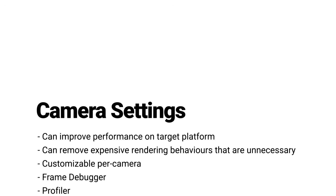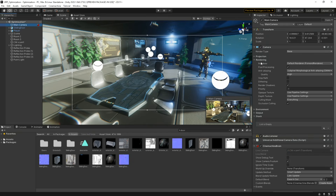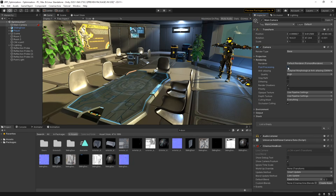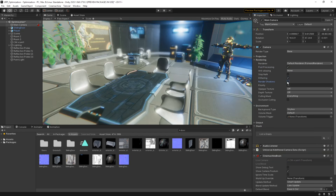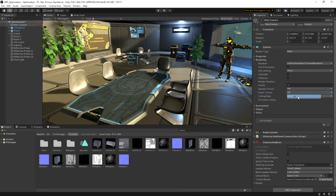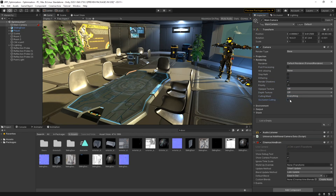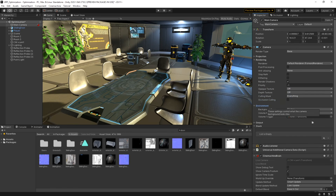Manage Your Camera Settings. The Universal Render Pipeline includes ways to optimize your camera by disabling unwanted renderer processes. This can be extremely useful if you're targeting both higher-end and lower-end devices in your project. By disabling things like post-processing, shadow rendering, or depth texture, you can remove any potentially expensive behaviors on lower-quality settings and increase performance.